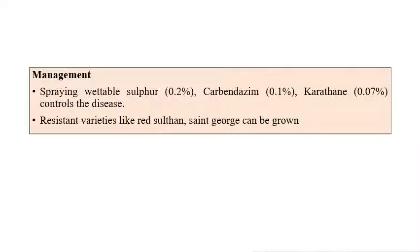For management of powdery mildew, spraying wettable sulfur at 0.2 percent, carbendazim at 1 percent, or Karathane at 0.07 percent is especially recommended. Karathane at 0.07 percent can control the disease. Some resistant varieties are also available, such as Red Sultan and St. George, which can be grown against this disease.